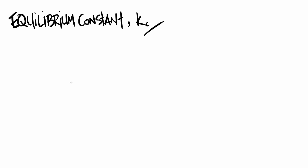It's the equilibrium constant — obviously all to do with equilibrium. Imagine we've got a general equilibrium: A plus 2B in equilibrium with C plus 3D. I prefer working in general terms rather than picking actual reactants, as it's easier to get the point across.